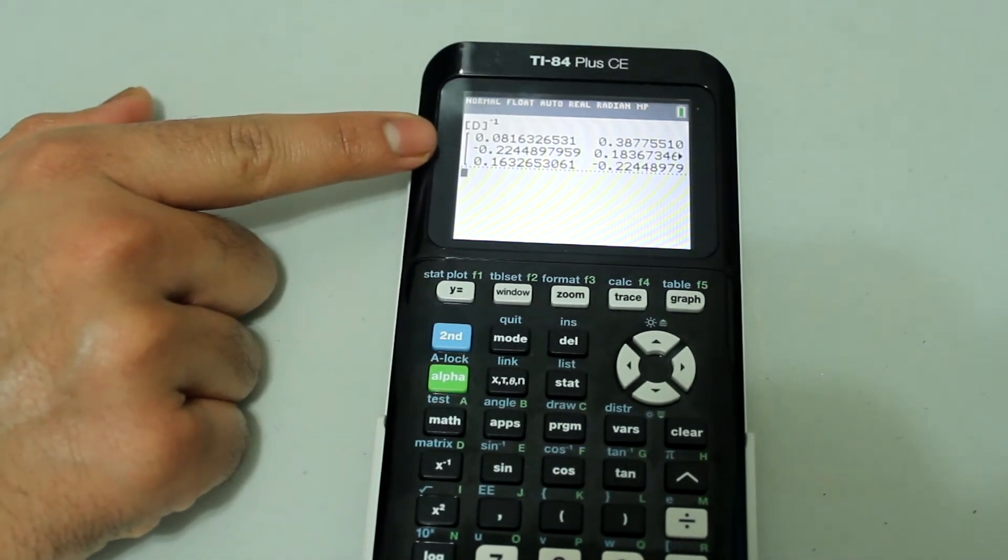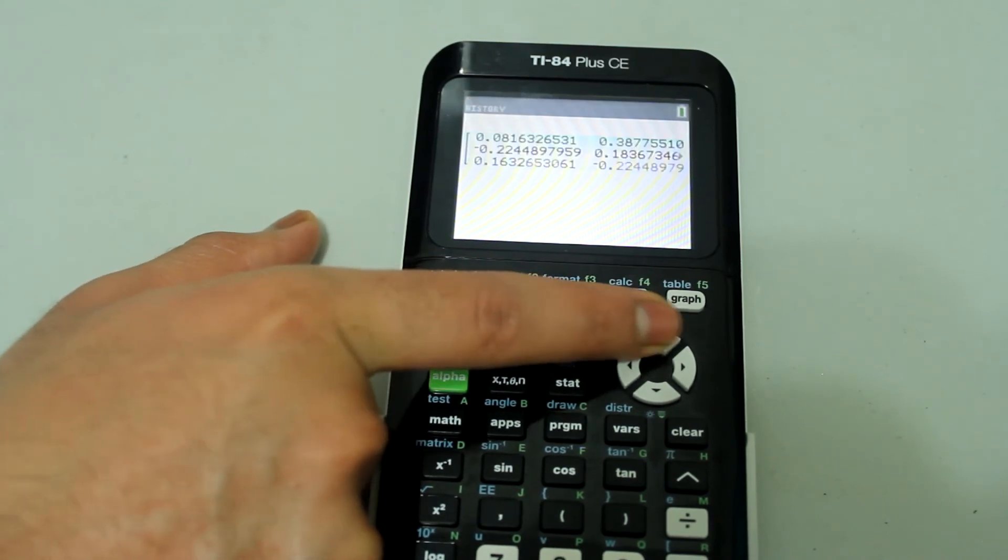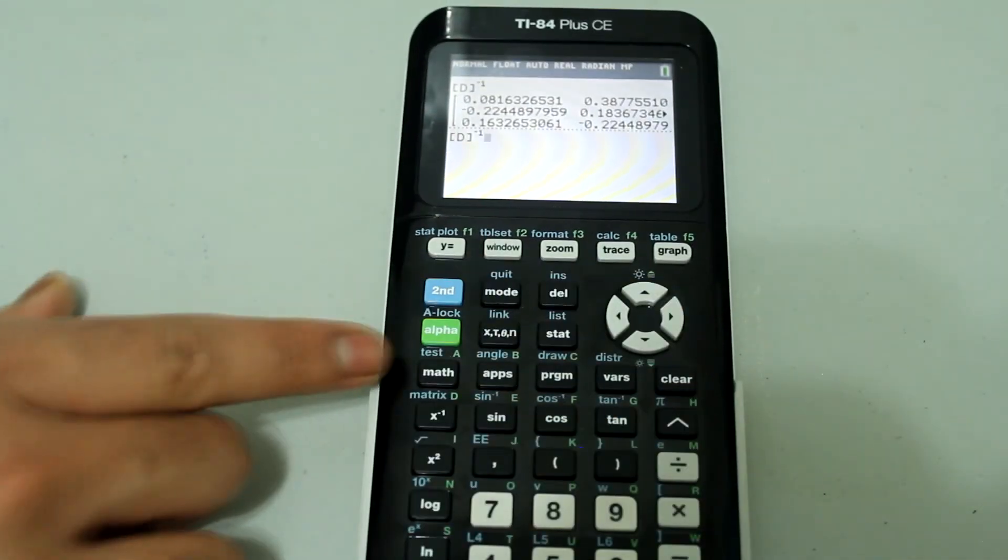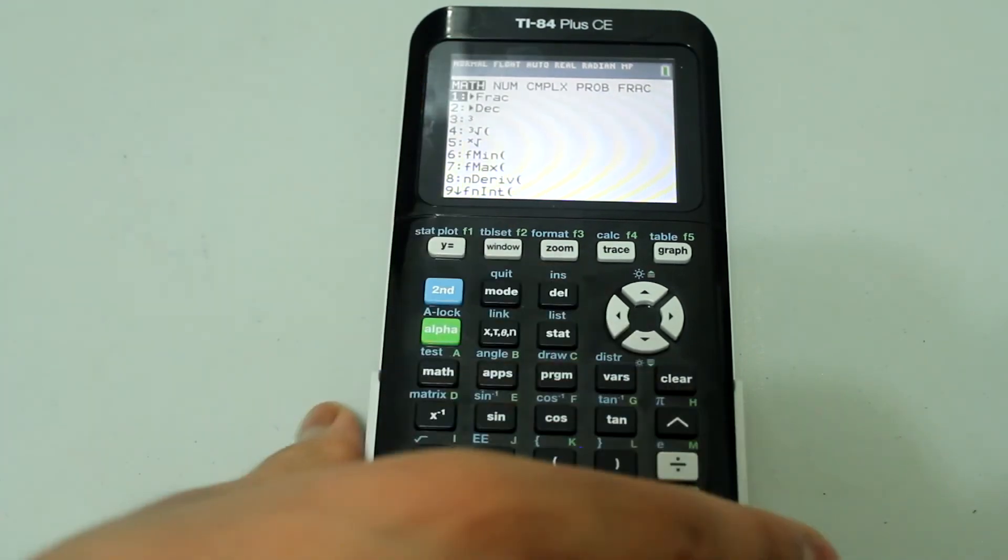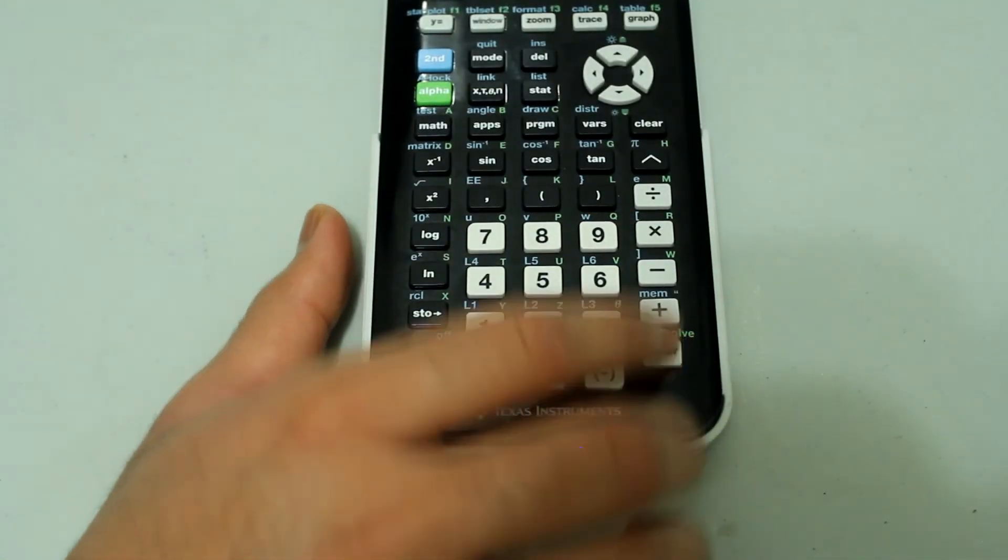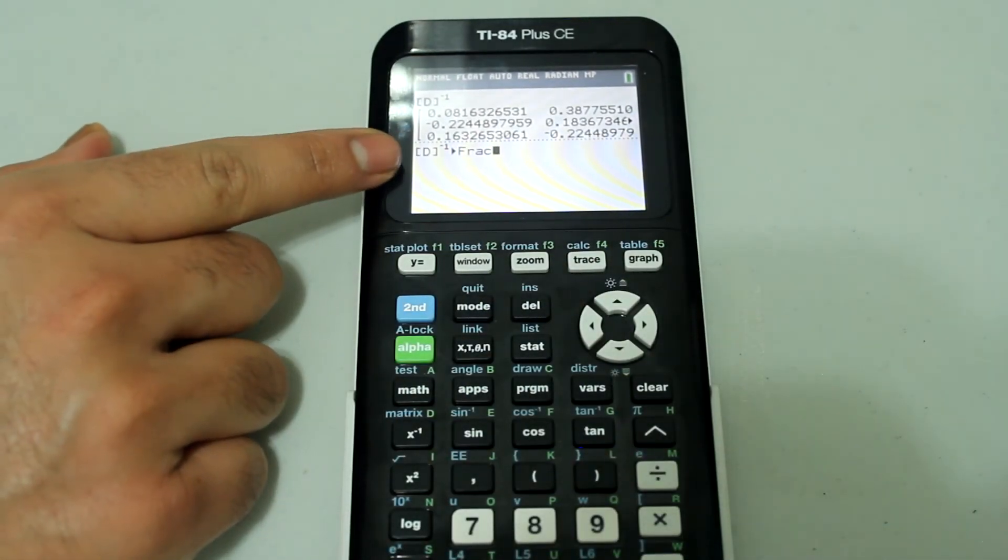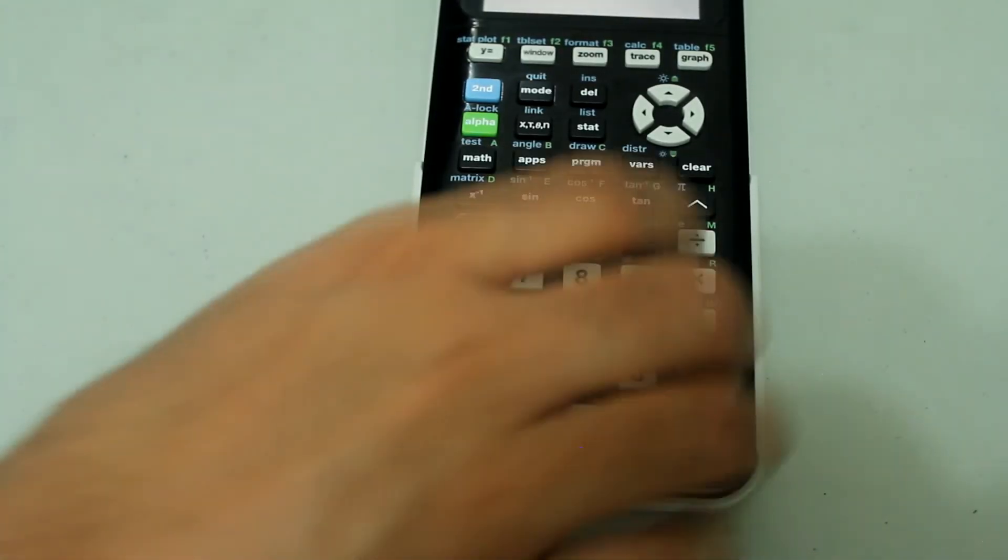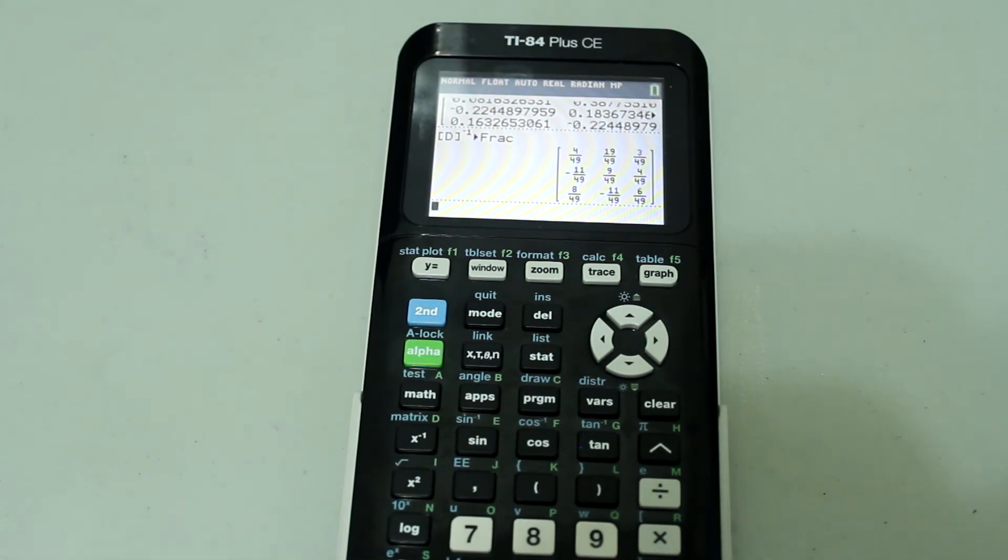If you wanted the matrix to come out in fraction form instead, what you can do is arrow over and select that entry again. Press enter. Press the math button. And the first option is fractions, so just press enter. The entry looks like this: Matrix D to the negative 1 and then fractions. Press enter. And we have our matrix in fraction form.